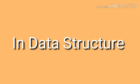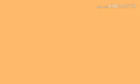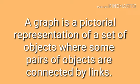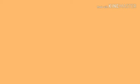And now, we will discuss all about graphs in data structure using Python language. First, what is graph? A graph is a pictorial representation of a set of objects where some pairs of objects are connected by links. The interconnected objects are represented by points termed as vertices and the links that connect the vertices are called edges.